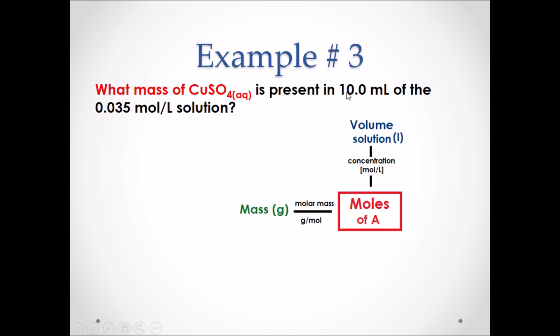We are given the volume of a solution and the concentration. We can then start with the volume of the solution and use the concentration to go to moles of copper sulfate. Once we have the moles of copper sulfate, we can then use the molar mass to go to the grams of copper sulfate. The molar mass of copper sulfate is 159.62 grams per mole.